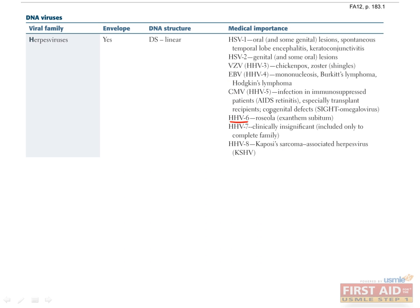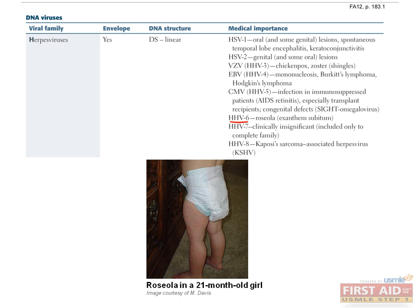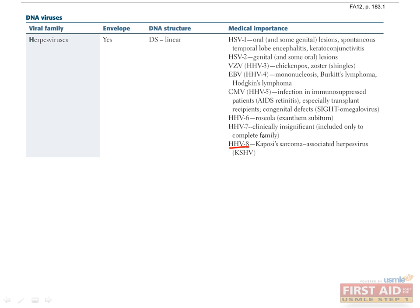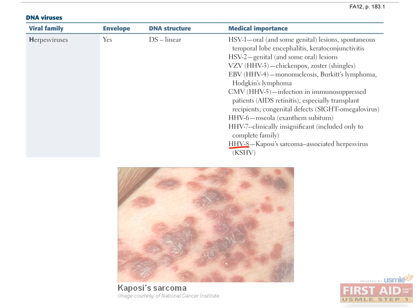HHV-6 can cause roseola, characterized by high fevers and a diffuse red macular rash. HHV-8 causes Kaposi sarcoma in HIV patients and results in angioproliferative lesions. Remember that bacillary angiomatosis caused by Bartonella henselae in immunocompromised hosts presents with angioproliferative lesions indistinguishable from Kaposi sarcoma, and biopsy is needed to determine the causative agent.